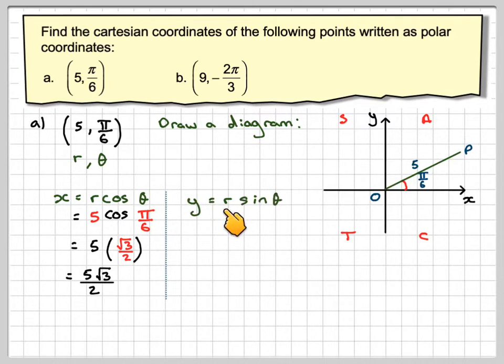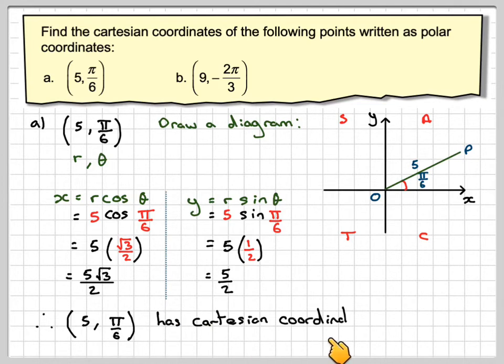And then to find the y-coordinate, r sin theta. This one is sin theta, that will be 5 sin pi by 6. Sine of pi by 6 is a half, so it's 5 times a half, which gives me 5 over 2. Therefore, 5 pi over 6 has Cartesian coordinates 5 pi over 2 comma 5 over 2.